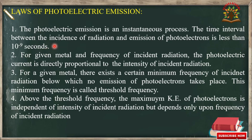There is no time lag between incidence of photons and emission of photoelectrons, which is why it is known as an instantaneous process. The second law states that for a given metal and frequency of incident radiation, the photoelectric current is directly proportional to the intensity of incident radiation. When frequency is kept constant and intensity is changed, photoelectric current increases, showing the direct relation between photoelectric current and intensity.